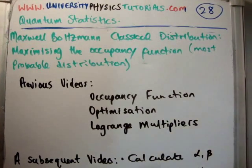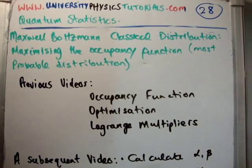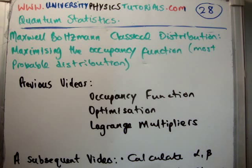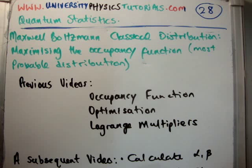In this video I'm going to continue on my tutorials on quantum statistics. This is video number 28, and I'm going to get the Maxwell-Boltzmann distribution function by maximizing the occupancy function, which is also calculating the most probable distribution.